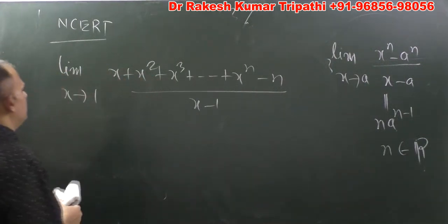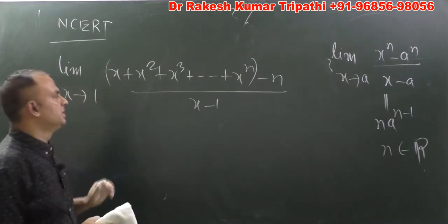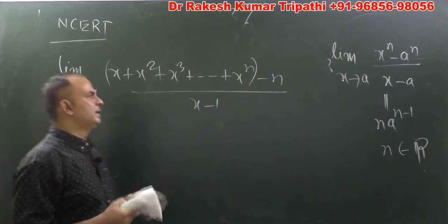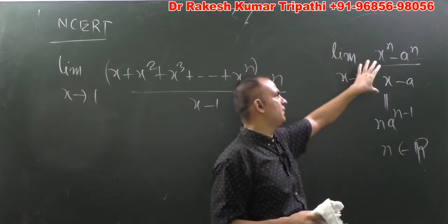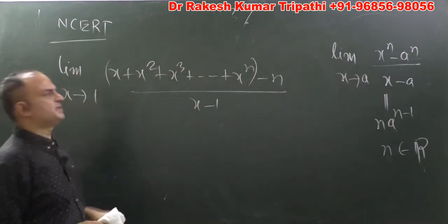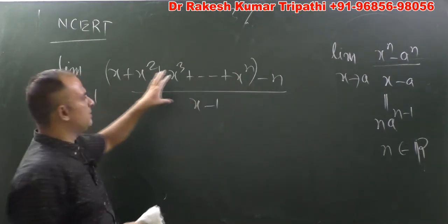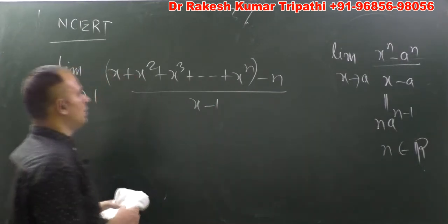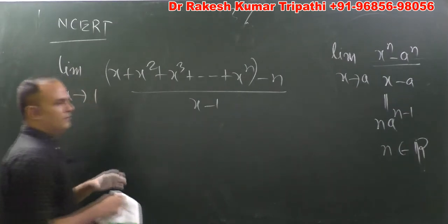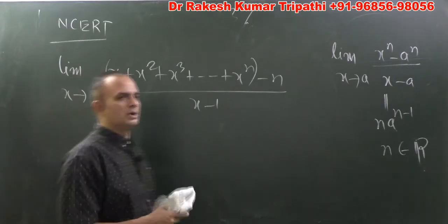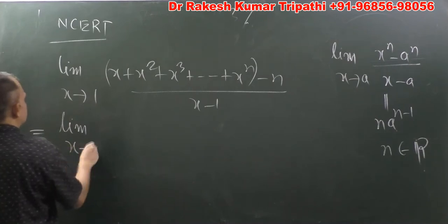This is a very important question. Some people may be thinking that the sum of a GP should be applied, but GP sum should not be applied here. There are two methods to evaluate this kind of limit: one is using a standard formula, and another is L'Hôpital's rule. L'Hôpital's rule is mainly for competitive and objective examinations, but for a descriptive examination you cannot apply it. We will cover L'Hôpital's rule at the end, but right now we are going through a systematic procedure.